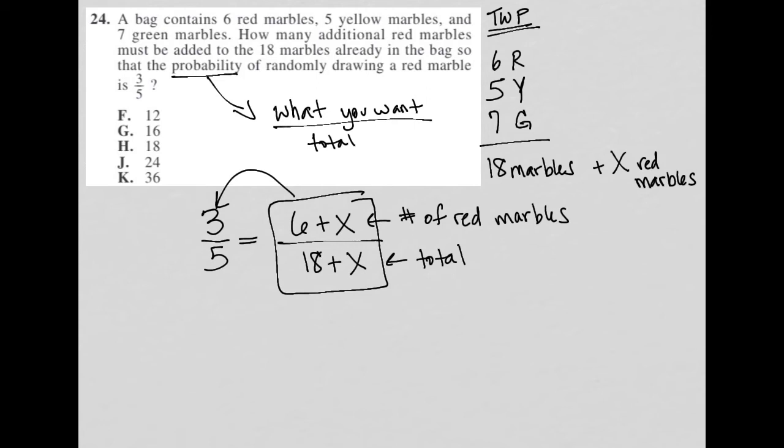So then how do I solve this? Well, this is technically a proportion, which means I can cross multiply. I'll just rewrite it again for neatness. Three fifths equals six plus X over 18 plus X. I'm going to cross multiply here and here, which means I'd have three parentheses 18 plus X equals five parentheses six plus X.